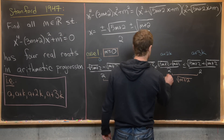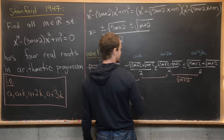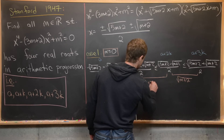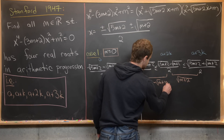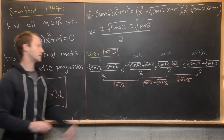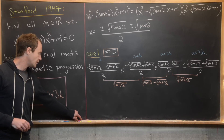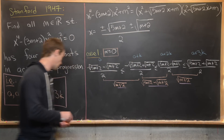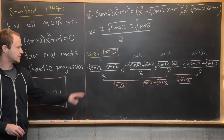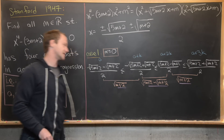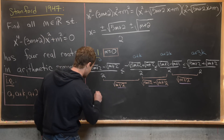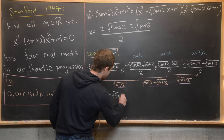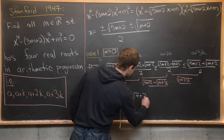For the distance between the third and second root, the √(5m+2) terms build up, giving √(5m+2) − √(m+2). For arithmetic progression we need all three distances equal, so we require √(m+2) = √(5m+2) − √(m+2).